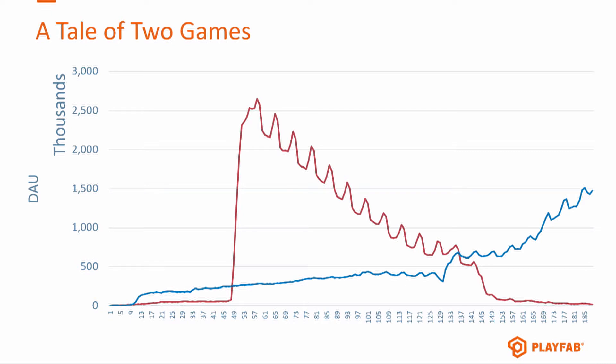You don't need to take their word for it — this is actual data from our service. There are two games represented here. The first game had an incredible launch; they were featured on iTunes and also on Google Play. They went up to over two and a half million DAU when they launched, and then they sawtoothed down. The spikes on the sawtooth pretty much represent weekend days. It's a classic picture of a game that launches with big numbers, falls off, long tail.